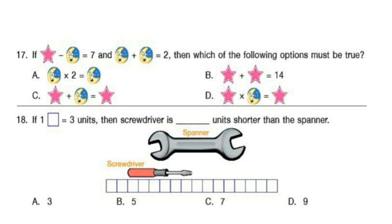Question 18. If one square is 3 units, then the screwdriver is how many units shorter than the spanner? You can pause the video and find out your answer. The correct answer is option D: 9.